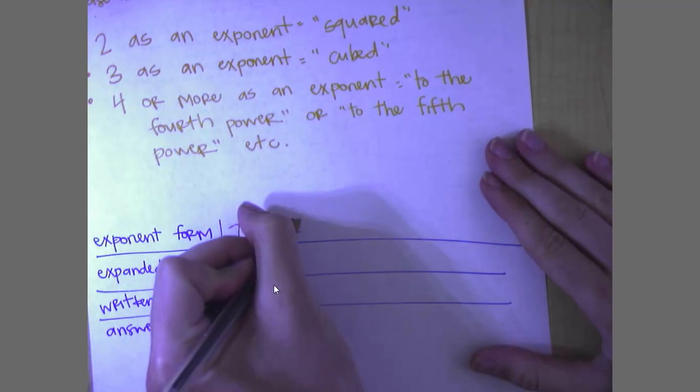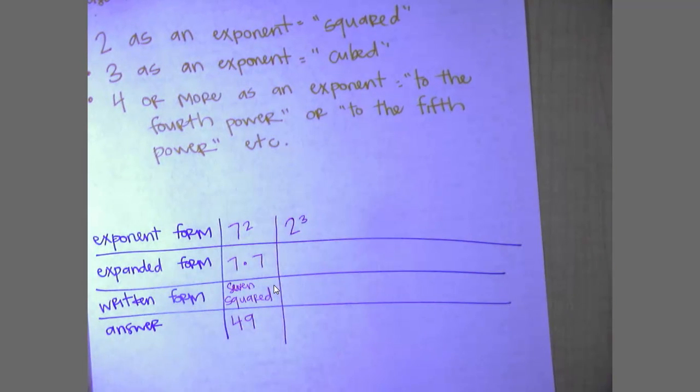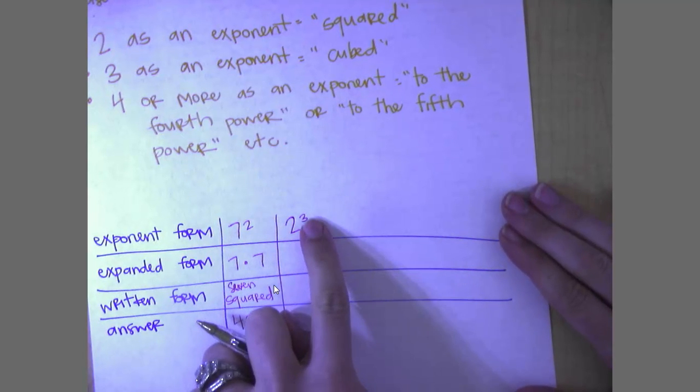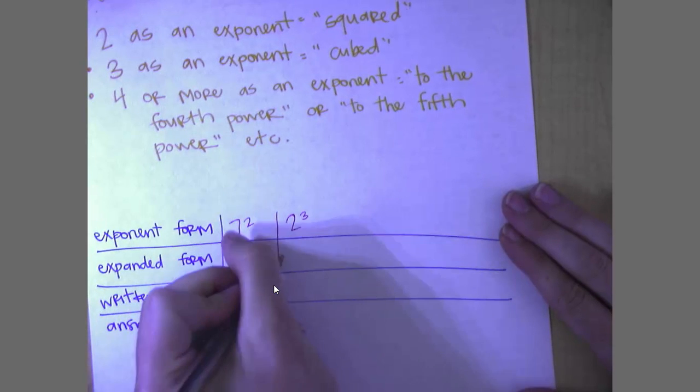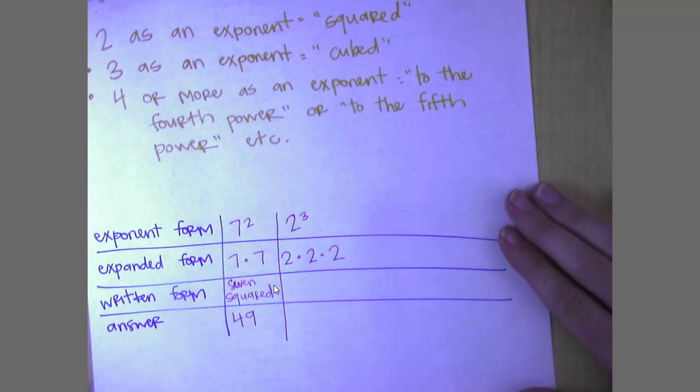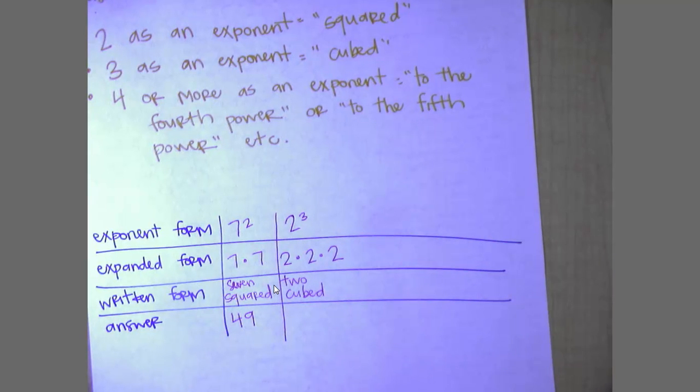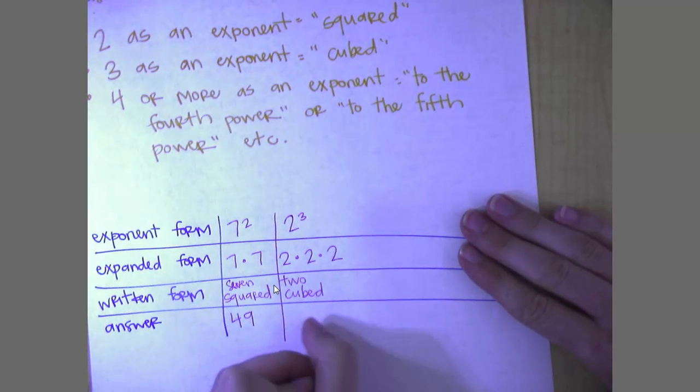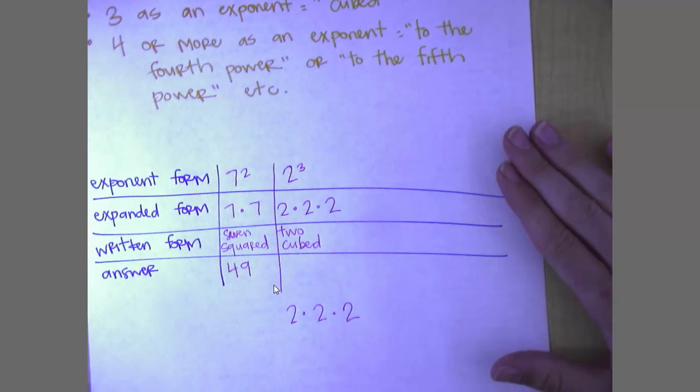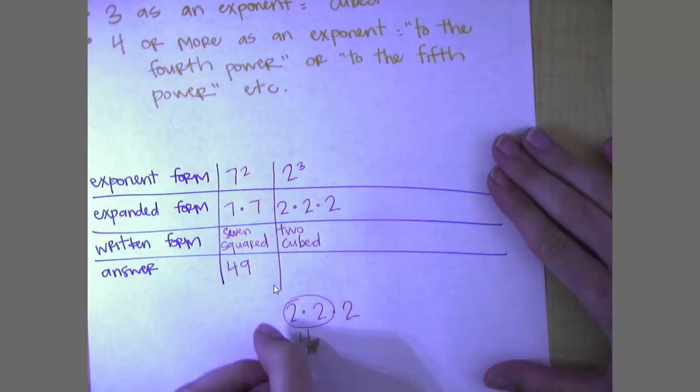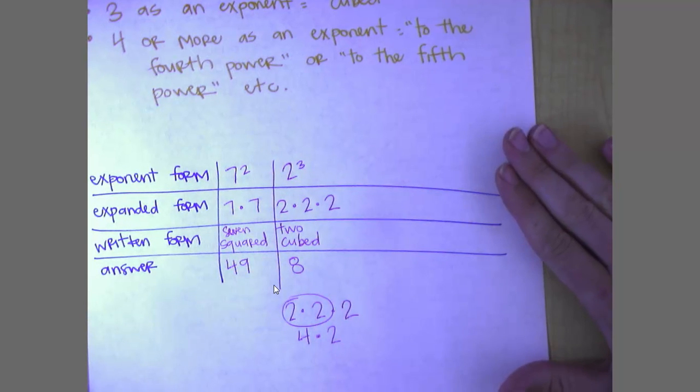Same thing if I have this, 2 cubed. I write my base number. The exponent tells me how many times to write it. So in this case, I'm going to write it 3 times. I say this as 2 cubed. And if I do 2 times 2 times 2, something that I like to do is go down and write it here and do a little bit of scratch work on it so I don't get confused. I know that 2 times 2 is 4. And I've still got to multiply it by 2 again. And 4 times 2 is 8. So 2 cubed is 8.